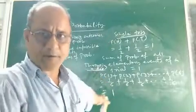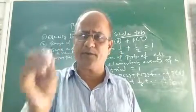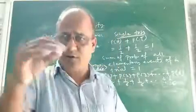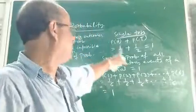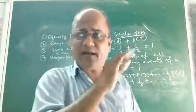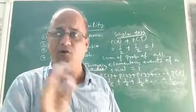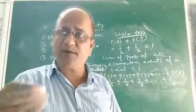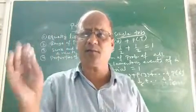This is what is known as the property of probability. So children, we discussed so many things: properties of probability, range of probability, and equally likely outcomes. We also came to know two new things — impossible event and sure or certain event — which we had not read in class 8 and 9 but read in this class. So this is the concept of probability.